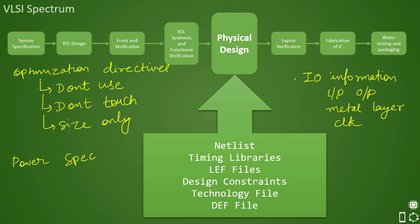There is one more input — the SAF file, which is an optional input. If present, it contains switching activity information for all critical switching cells, mostly clock-related cells like clock gating cells. It captures how much switching activity those cells have, and it helps in power optimization, specifically dynamic power optimization. These are the inputs also provided to the physical design team.